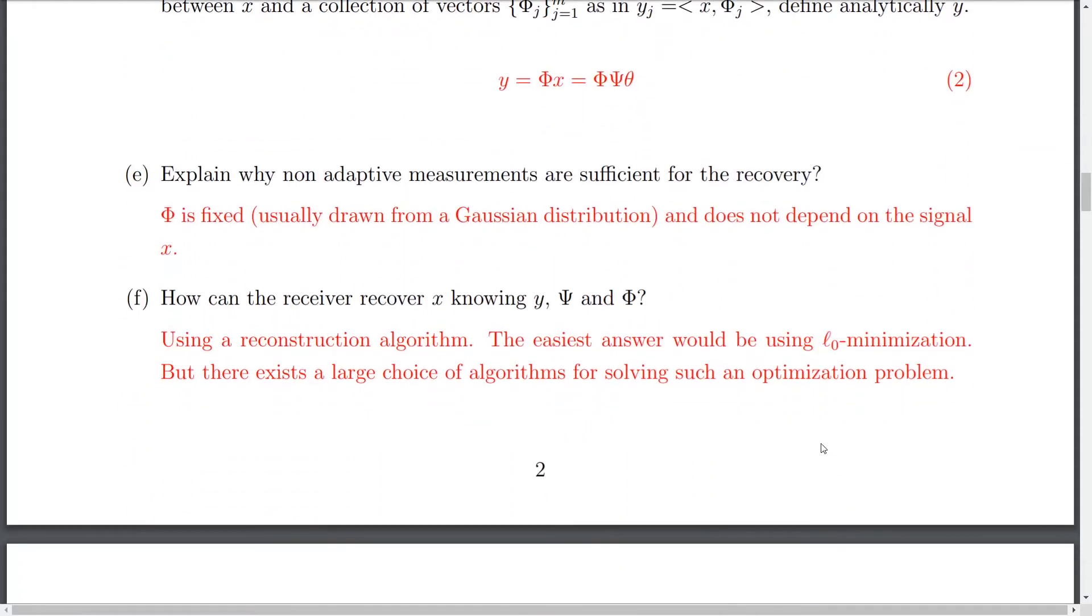Okay. So, explain why non-adaptive measurements are actually sufficient for the recovery. So, we know that this phi is actually fixed and it could be used in different compressed sensing problems, regardless of the data or the type of data that you have. All we care about is that this specific phi has to obey the RIP property, at least. Or, simply, it has to be drawn, for example, from a Gaussian distribution or a Bernoulli distribution. And this actually does not depend on the signal. That's why non-adaptive measurements are okay to recover or to reconstruct our original signal.